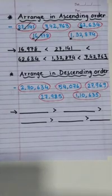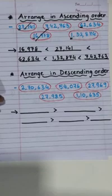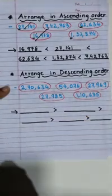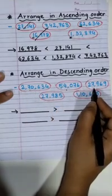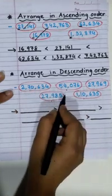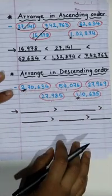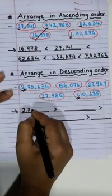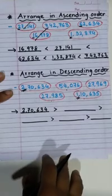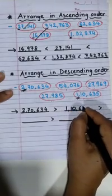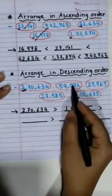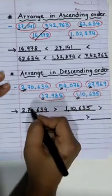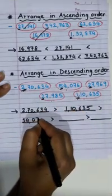Now let's start arranging the given group of numbers in descending order. First of all, the numbers with 6 digits will be the biggest, right? So here we have 6 digit, 5, 5, 5, and 6. We will compare these two first. The first digit is 2 and here we have 1, so of course this one is bigger. So 2,70,634 will be the biggest and then will be 1,10,635. Then we have these three 5 digit numbers. The first digit is 5, 2, and 2 — so 54,076 is a bigger number.